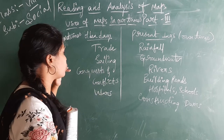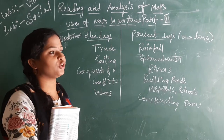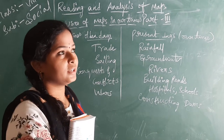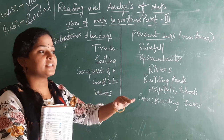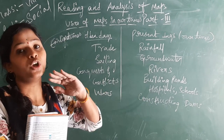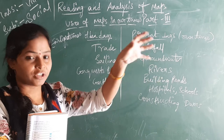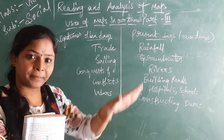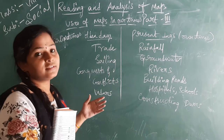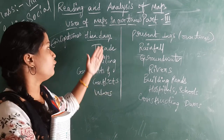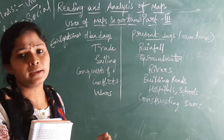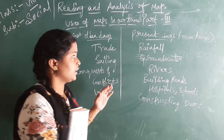Next coming to conquest and conflicts. What is the meaning of conflict? For example, like how they would plan going to war on another country — first they used to do a picturization on the map. At the time of wars also, they started using maps in the earlier days.